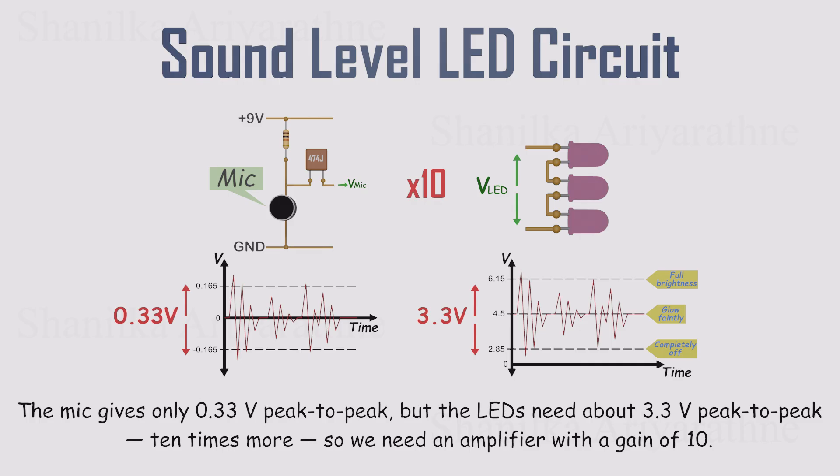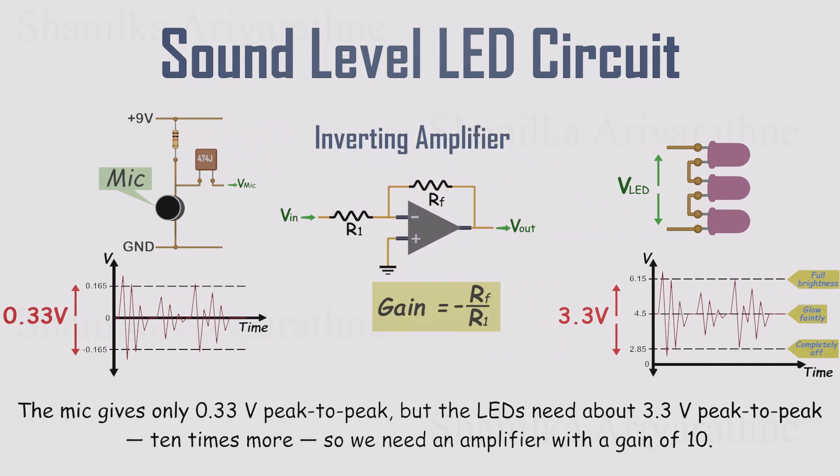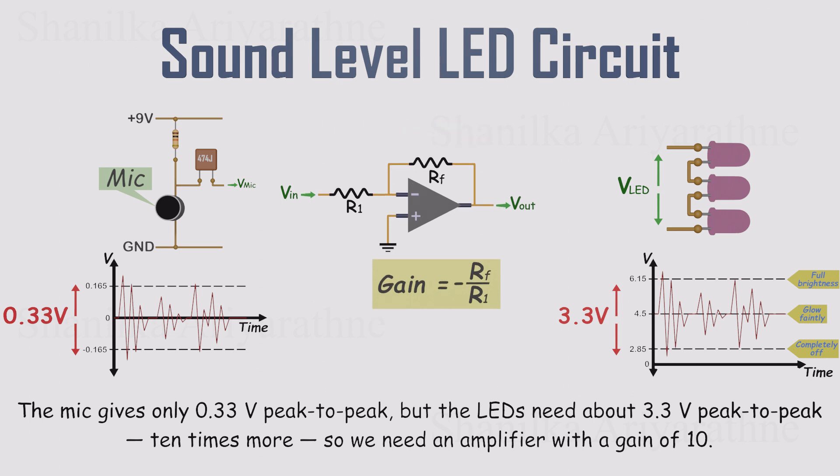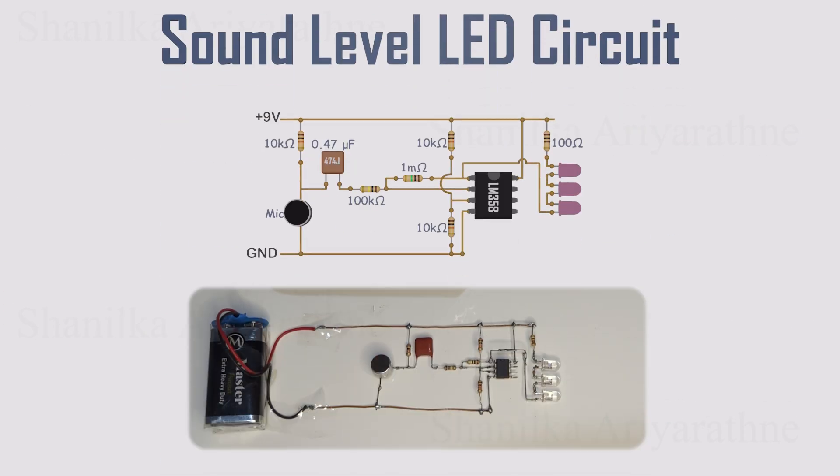We could build this using either an inverting or a non-inverting amplifier, but let's go with the inverting setup for now. To get a gain of 10, we just need the right resistor values. If we pick 1 megaohm for the feedback resistor Rf, and 100 kiloohms for R1, the math works out perfectly. Gain equals 10. And don't worry about the negative sign in the formula. The LED wiring takes care of the inversion for us. With this setup, the circuit takes the microphone's tiny signal and makes the LED brightness dance in sync with sound.